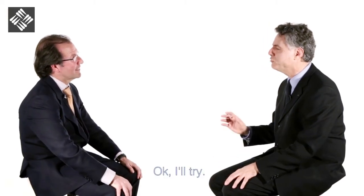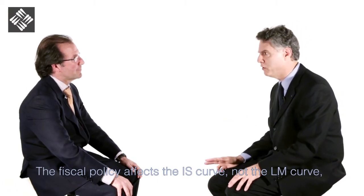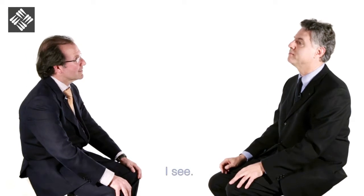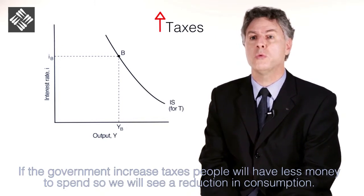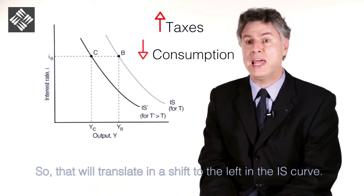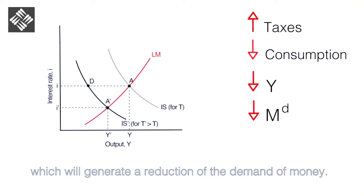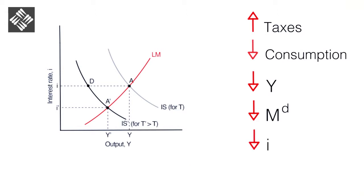Where do we see it graphically? Okay, I'll try. The fiscal policy affects the IS curve, not the LM curve, because we are considering taxes and public expenditure. If the government increases taxes, people will have less money to spend, so we will see a reduction in consumption, which will translate into a shift to the left in the IS curve. As a consequence of the fall in production, people will have less income, which will generate a reduction in the demand for money. Now the demand for money will become smaller than the supply, generating a reduction of the interest rate.